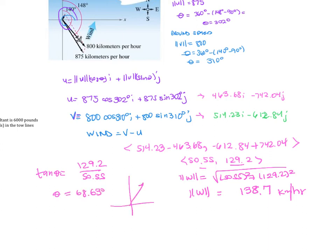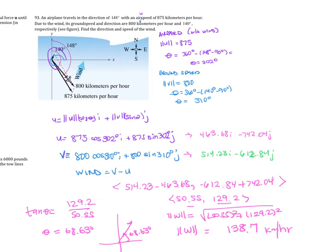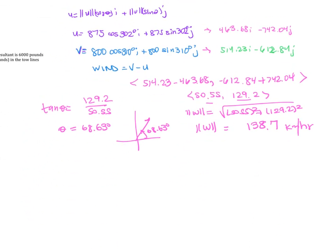This is the wind going this direction here, 68.63 degrees. If you notice, the airspeed is 875 and the ground speed is 800, so therefore it's slowing it down. The wind is going against the plane.